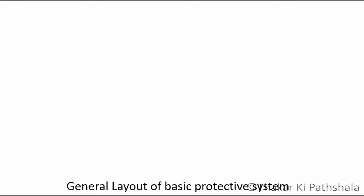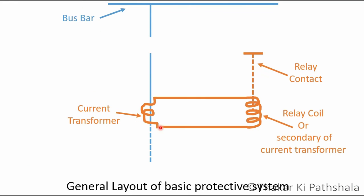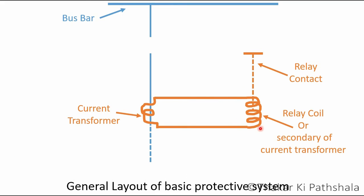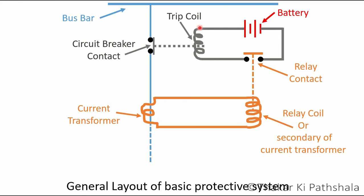Let's dive deeper and see how this actually functions. Here is the general layout of this protective system. This is our electrical system which is being protected. This whole section is our sensing part, or we can call it the relay part. This is basically a step-down CT which steps down the primary current. The secondary of the CT is connected to the relay coil. This is the setup for the circuit breaker, and this battery energizes the trip coil in order to pull apart the contact of the circuit breaker.